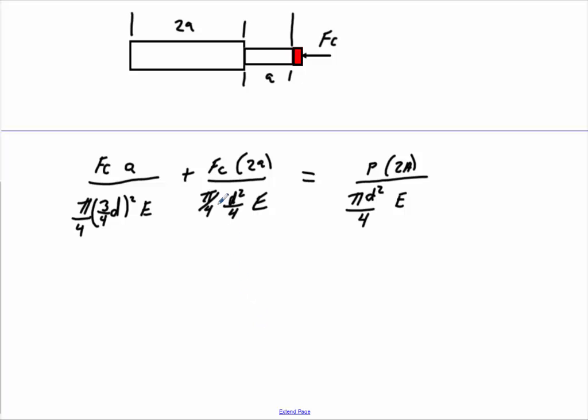Because the deflections here have to be equal to zero. So now what you're going to do is you can find FC here in terms of P, and that's all you're going to do in this problem here. And if you do the work, you'll find that FC is equal to 9 over 17 times P.